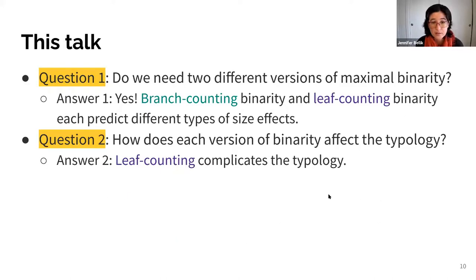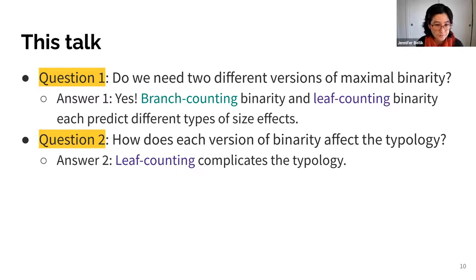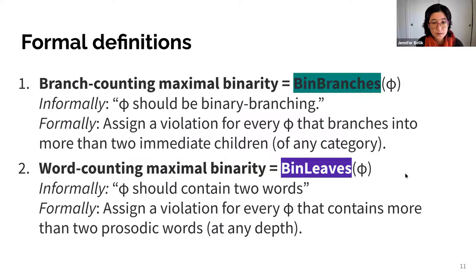In this talk, I'll address two questions. First, do we really need two different versions of maximal binarity? The answer is yes — branch counting binarity and leaf counting binarity each predict different types of size effects, and both types are found in the real world. The second question is how does each version affect the predicted typology? Leaf counting binarity complicates the typology compared to branch counting binarity.